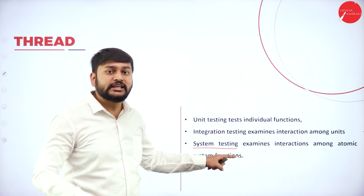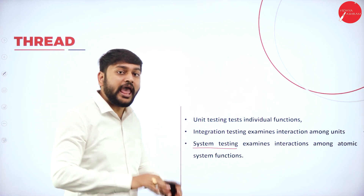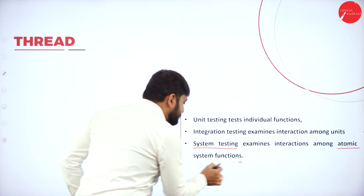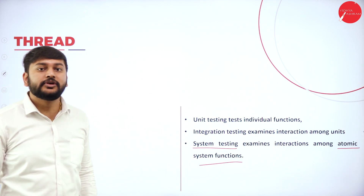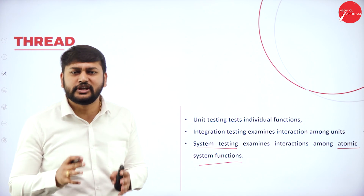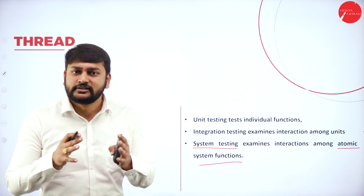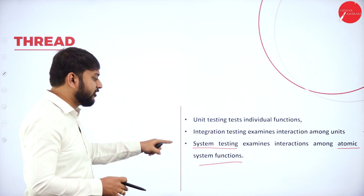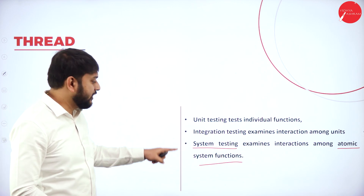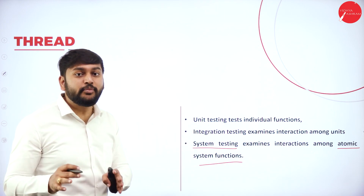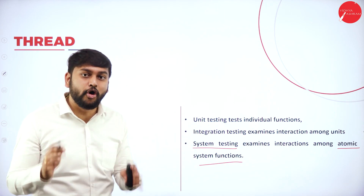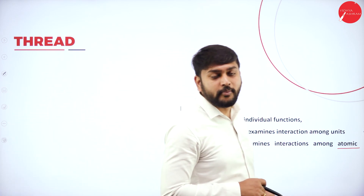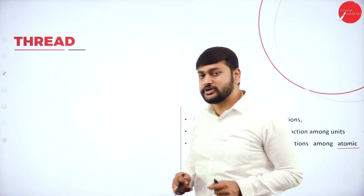When it comes to the integration level, threats mainly focus on MM path. MM path gives the feasible path for execution of the program — that's what a thread gives you at integration level. When it comes to the system level, threats mainly concentrate on the sequence of atomic system functions. These three points you need to remember: unit level uses execution-time path, integration level uses MM path, and system level uses sequence of ASF.